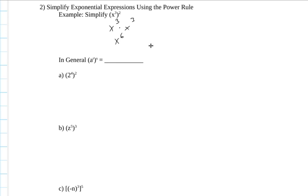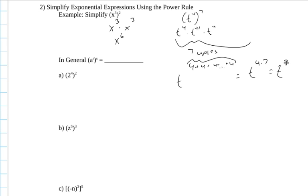And in general, that actually does work. If I had something like t to the 4th to the 7th, then I would have t to the 4th times t to the 4th times t to the 4th, and I'd end up with 7 copies. I'd be adding 4 plus 4 plus 4 and so on, and there would be 7 copies. Adding 4 to itself 7 times is the same as 4 times 7, which would be 28.